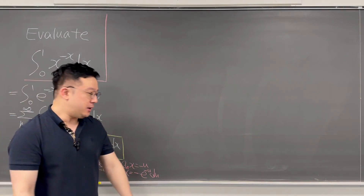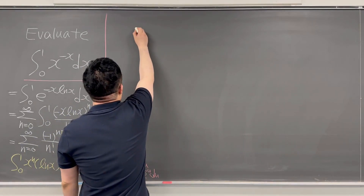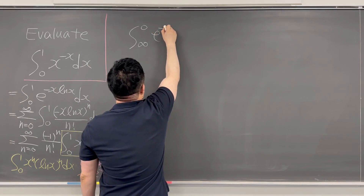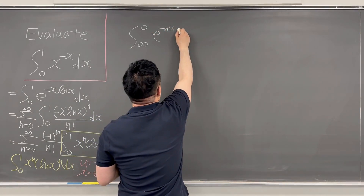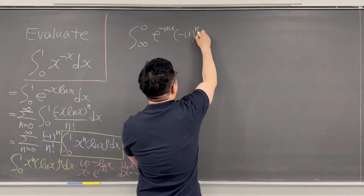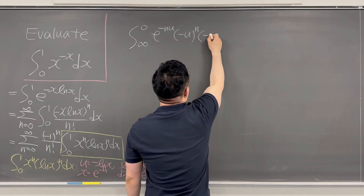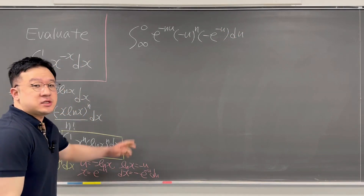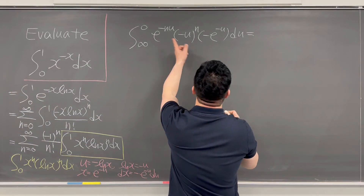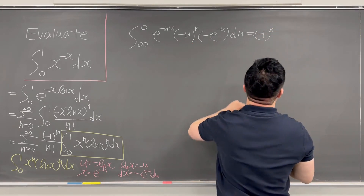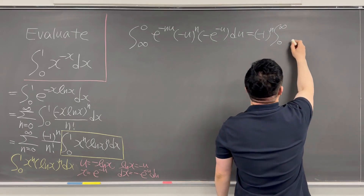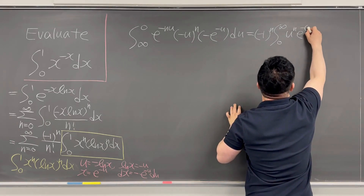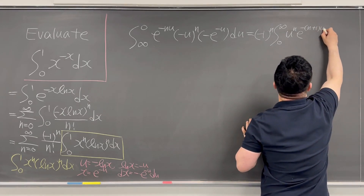Using this substitution to rewrite the integral, we set up the integral from infinity to zero of e to the power of negative n times u, times (negative u) to the power of n, times negative e to the power of negative u, du. We can rewrite this by pulling the alternating sign out: negative one to the power of n, times the integral from zero to infinity of u to the power of n times e to the power of negative (n plus 1) times u, du.